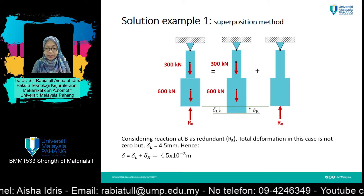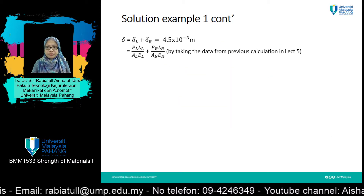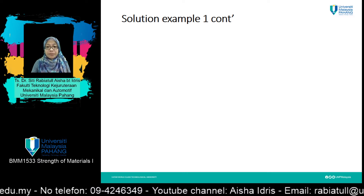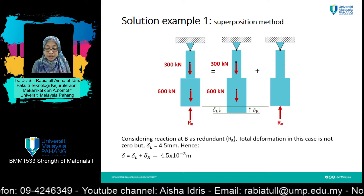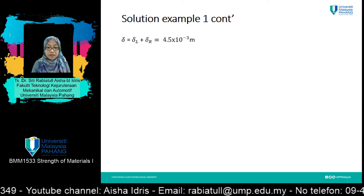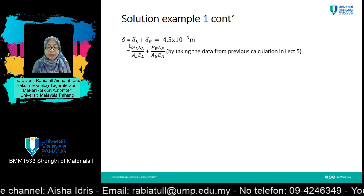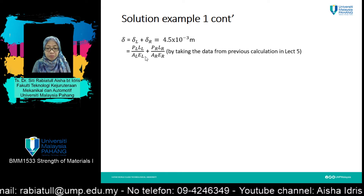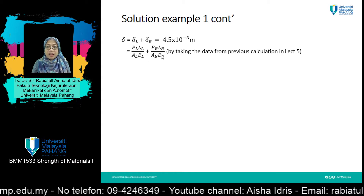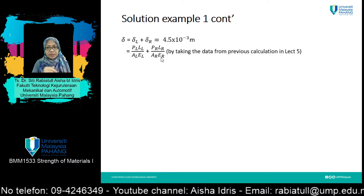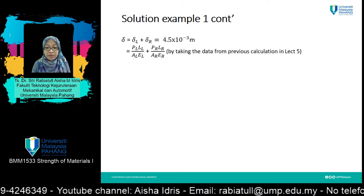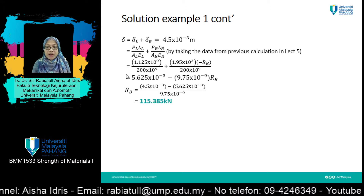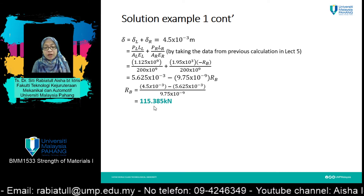You need to review Lecture 5 first, where you learned how to get these values using delta equals PL over AE. For delta_L, calculate PL over AE for each section — this was calculated in Lecture 5. After substituting into the formula, you will get the value for R_B equals 115.385 kN.